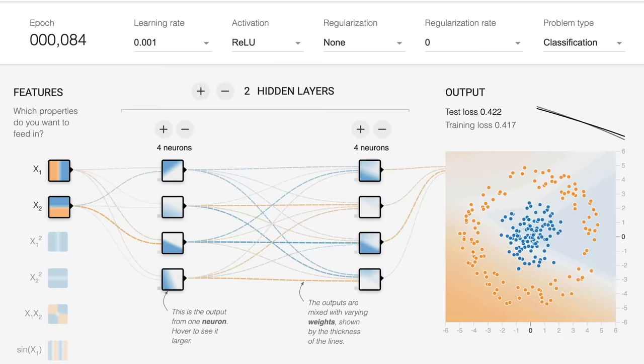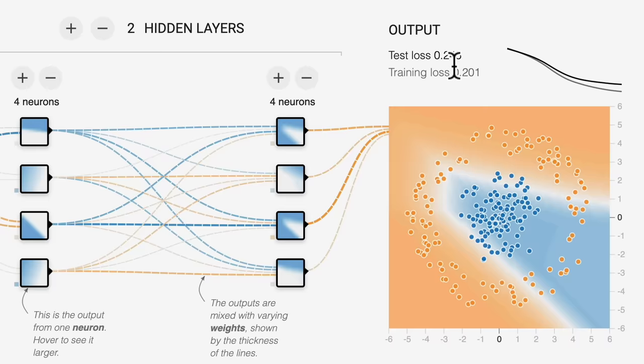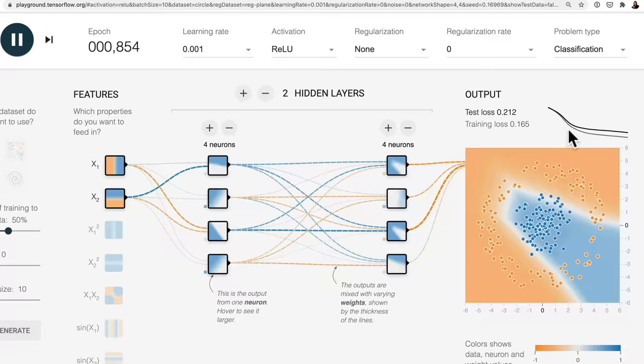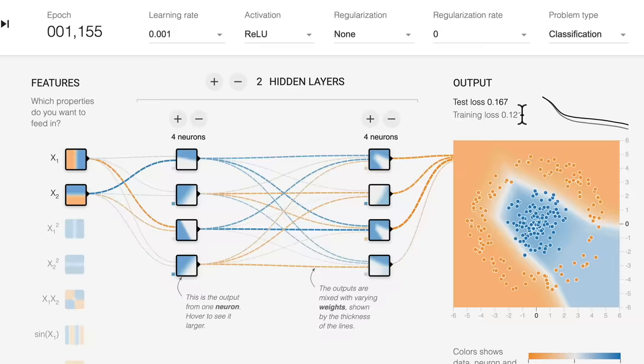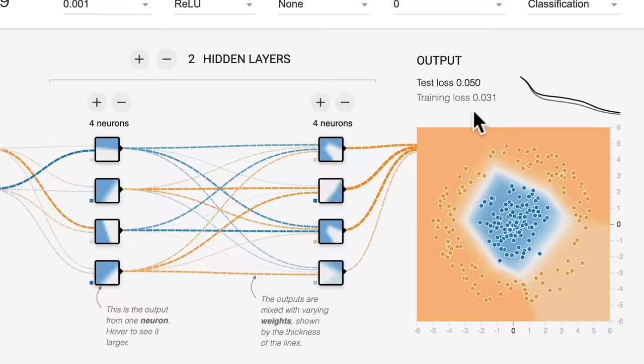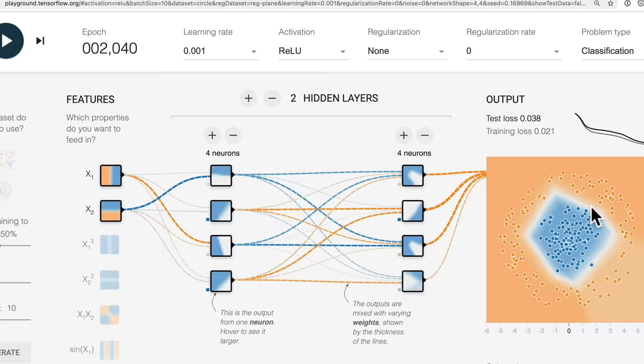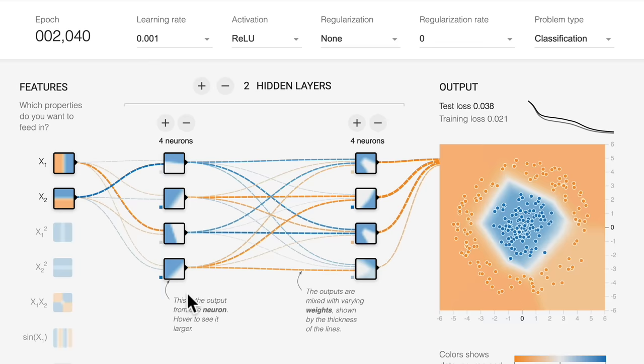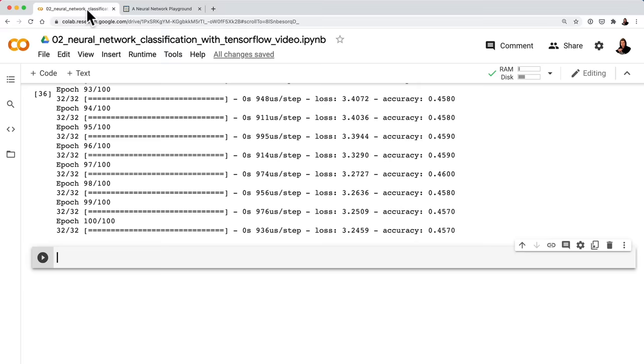Whoa! The test loss is going down and continuing to go down. We're nearly at a thousand epochs — it's still improving. It's starting to distinguish orange dots from blue dots! Just by increasing the number of hidden layers, adding more hidden neurons, and using a non-linear activation function, we get much better results. Great practice — let's replicate this neural network in TensorFlow code.